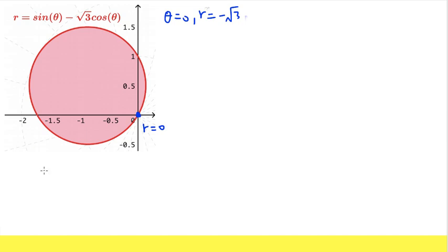So let me just write down. We have sin theta minus square root of 3 cosine theta, and then we are going to set this to be 0.